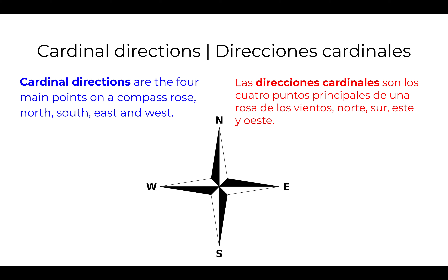Cardinal directions are the four main points on a compass rose: north, south, east, and west. Las direcciones cardinales son los cuatro puntos principales de una rosa de los vientos: norte, sur, este, y oeste.